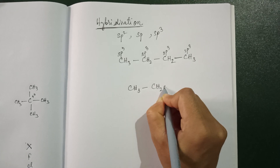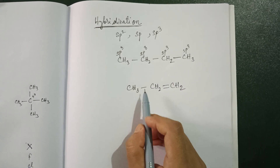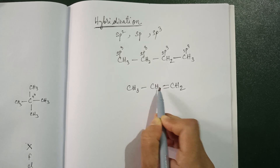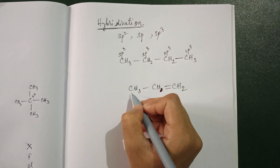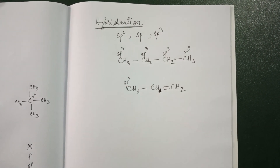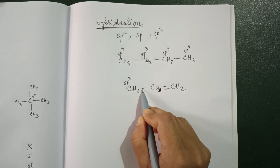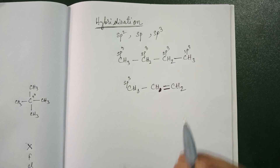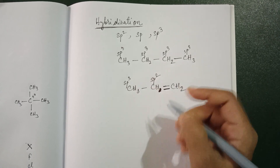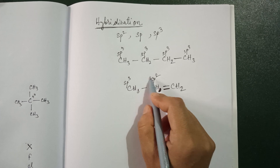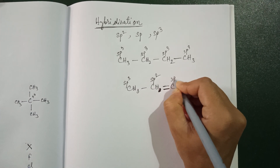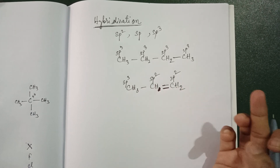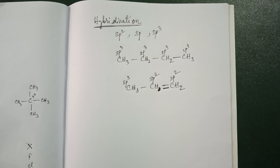Now let us talk about another carbon: CH3-CH2 double bond CH2. Is there any mistake? This carbon: one, two, three, four — it is only H. As we learned, single-bonded carbon is always sp3. Now this carbon is double-bonded as well as single-bonded, but we consider the double bond, so this is sp2. Double-bonded carbons are always sp2.